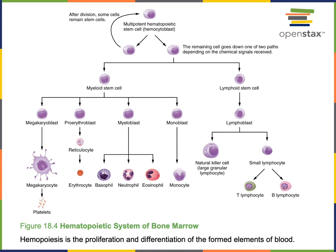The hematopoietic stem cell, also known as a hemocytoblast, is a multipotent cell that can differentiate to form all of the formed elements of blood. In the first step of differentiation, the hematopoietic stem cell can form either a myeloid stem cell or a lymphoid stem cell. Myeloid stem cells are restricted in their fate — they cannot form lymphocytes.